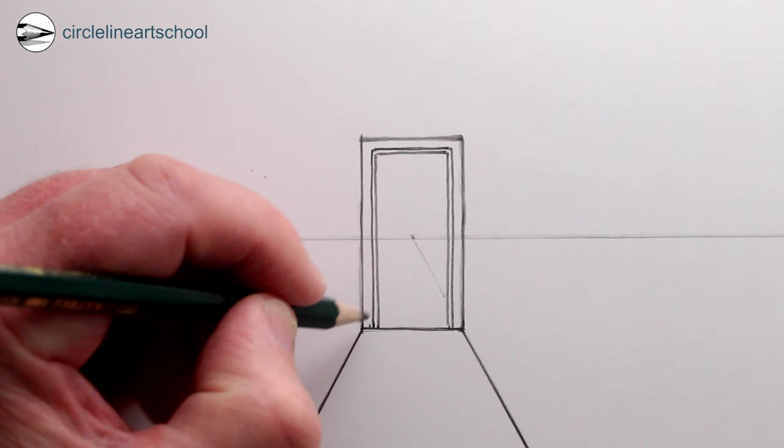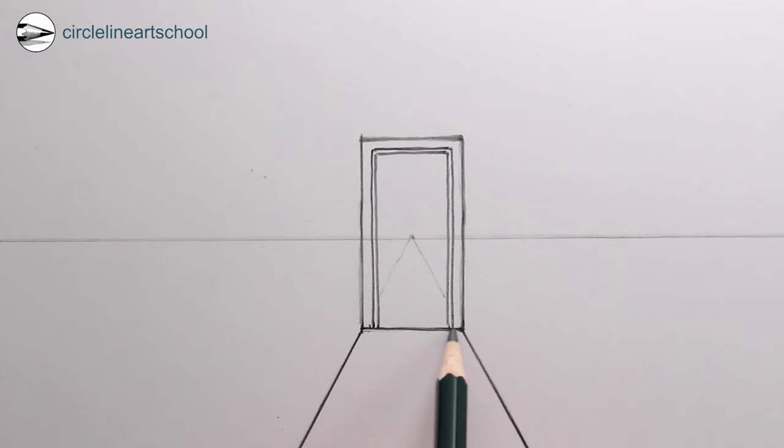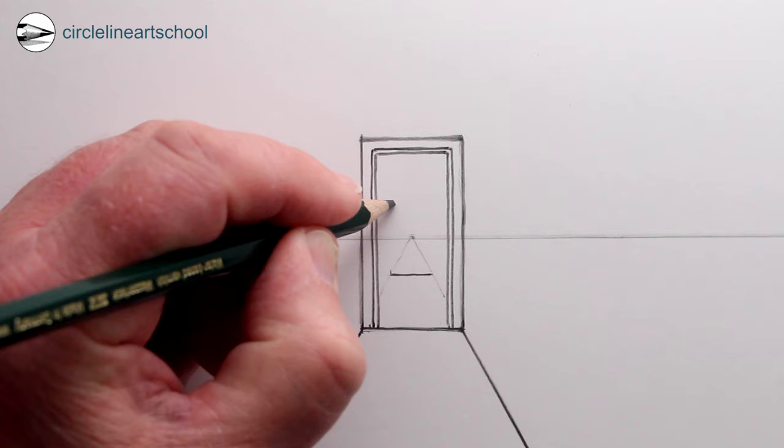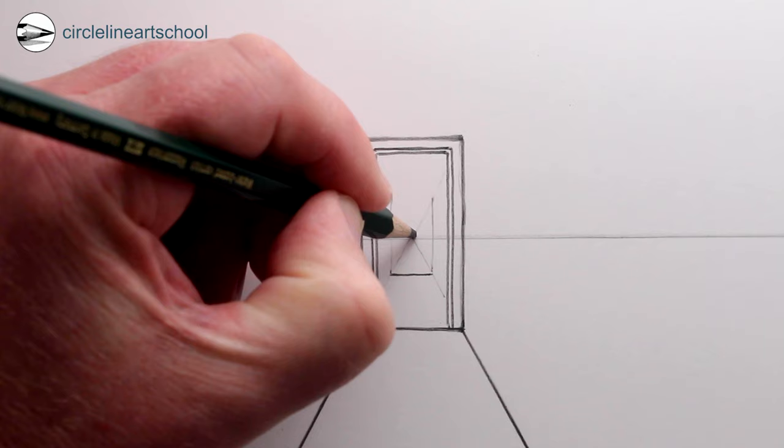Next using the vanishing point we could extend the hallway beyond the doorframe and away from us, the viewer, using the vanishing point as a guide. Then choose where you want to place a doorframe in the distance and draw a horizontal line and then the two vertical lines.